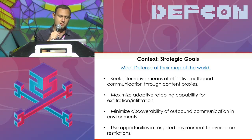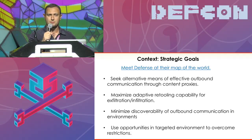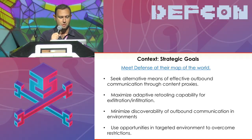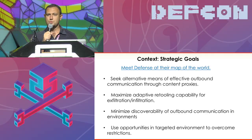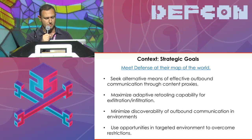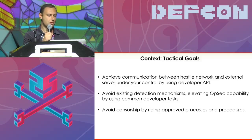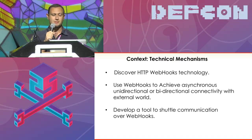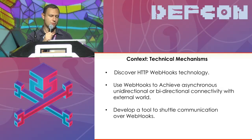Before we get into the technical details, we have to set some stage for the goals of our talk and answer the question why we're doing this. As a red teamer, we need to meet the defense at their map of the world. We need to seek alternative means of effective outbound communication, and we're going to try to minimize our discoverability. We also want to live off the land and use opportunities presented to us by organizations. The technical goals are to achieve communication between hostile networks and external hosts, avoid detection, and avoid censorship of the intermediate content proxy.